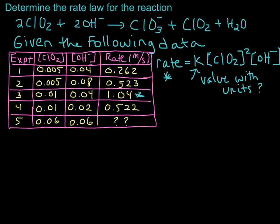So I'm going to choose experiment three for no particular reason. We could have chosen experiment one, two, three, or four, we would get the same value for the rate constant.